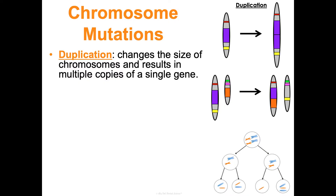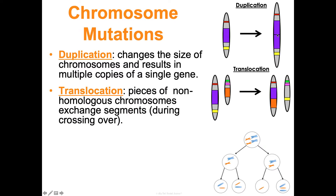For chromosome mutations, one example is duplication — where the size of a chromosome is changed and results in multiple copies of the same genes; part of it gets doubled so you have two copies of the instructions for that gene on one chromosome. Translocation is where non-homologous chromosomes cross over, causing a mixing of genes — a problem because you end up with non-homologous chromosome pairs rather than two copies of each set of instructions.